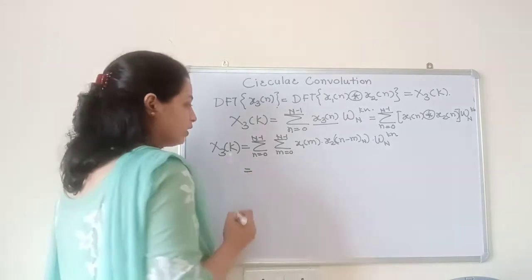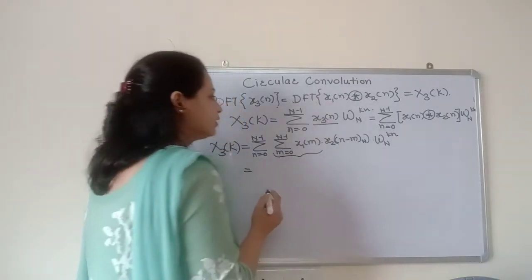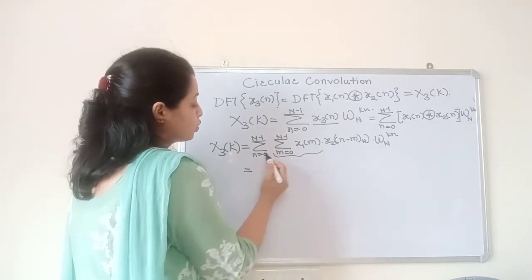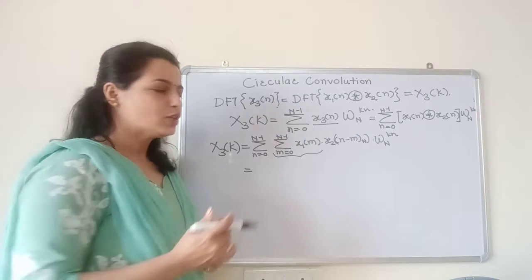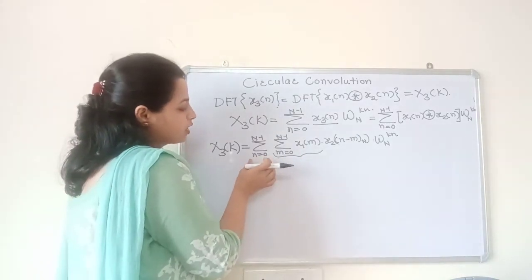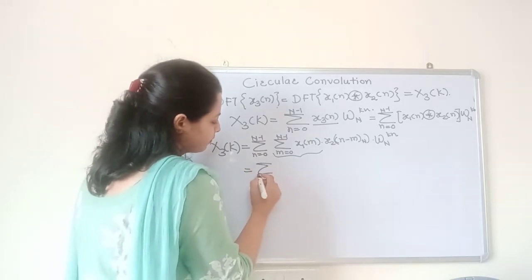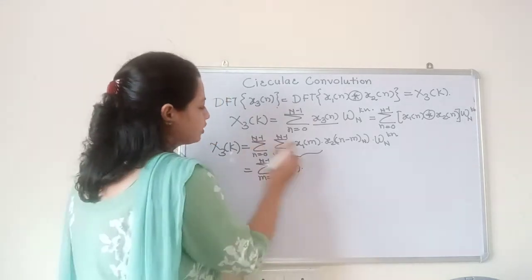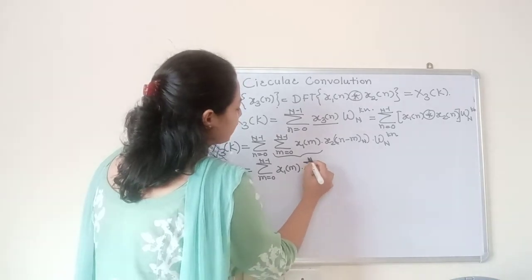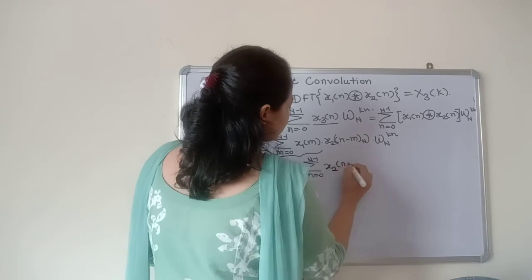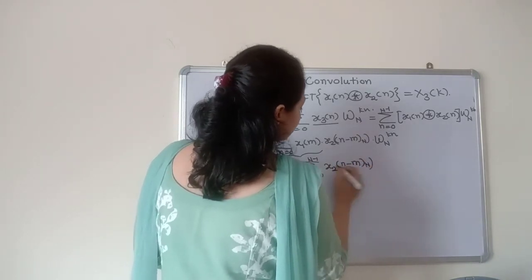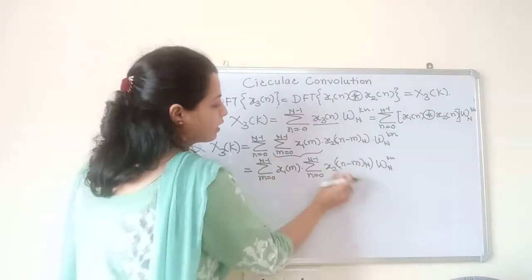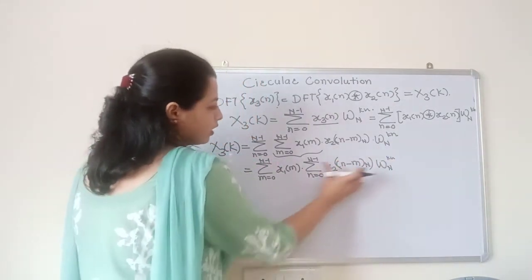Now observe this term: x1 of m is only a function of m and is independent of n, so we can take this term out of the n-summation. So we get the summation m varying from 0 to N minus 1 of x1 of m, multiplied by the inner summation n varying from 0 to N minus 1 of x2 of n minus m, which is circularly periodic with period capital N, times omega N raised to kn. Since this inner term depends on n, we cannot take it out.